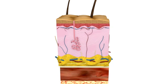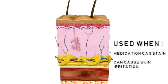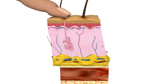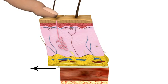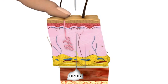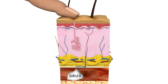The Z-track route is used when the medication can stain or cause skin irritation. For the Z-track technique, the skin is pulled to one side, which moves the subcutaneous tissue approximately one to two centimeters. The needle is inserted at a 90 degree angle and after aspiration the medication is inserted into the muscle, whereupon the nurse waits ten seconds. This allows the medication to disperse within the muscle. After the time lapse, the skin is released as the needle is withdrawn.